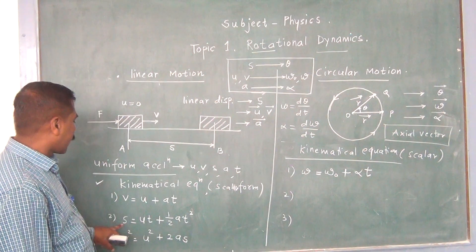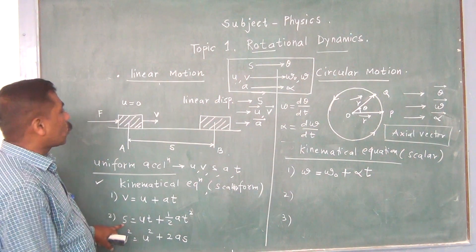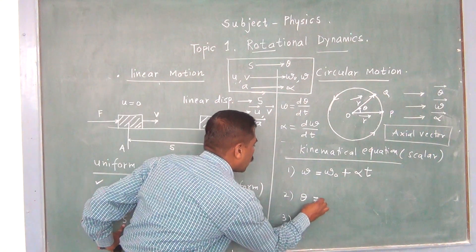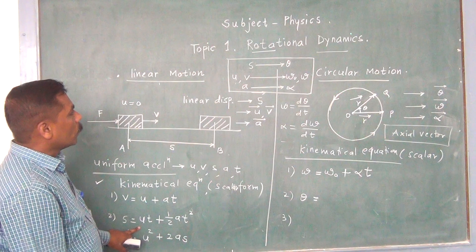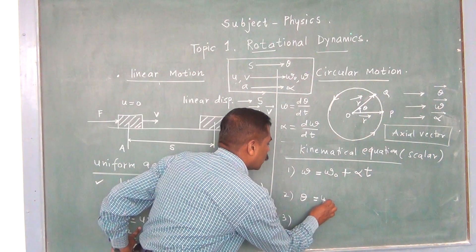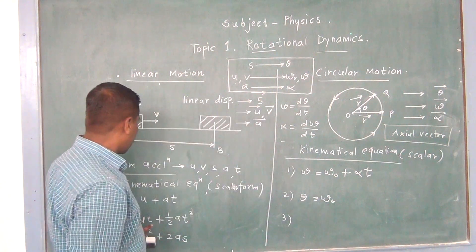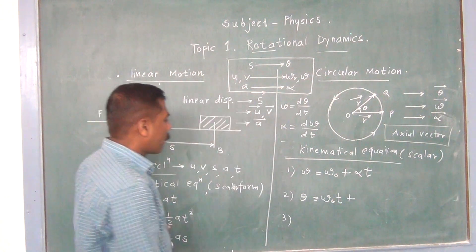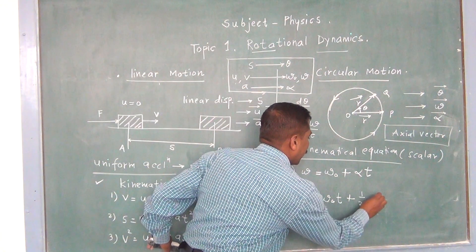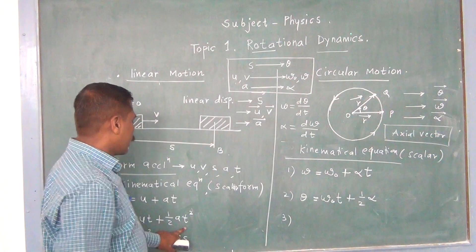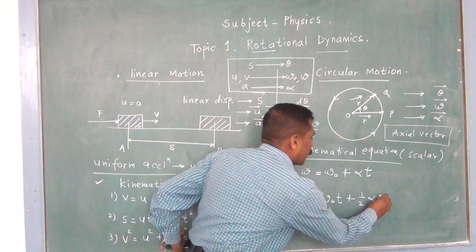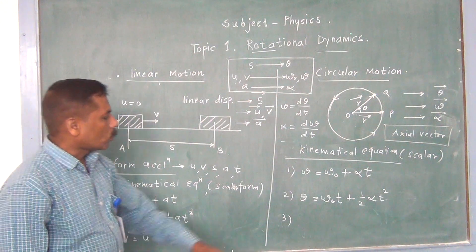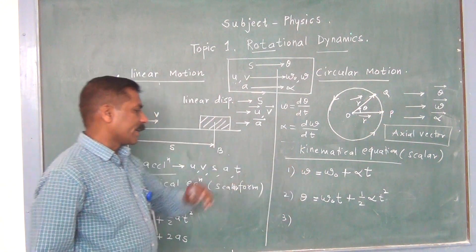How can we find out the second kinematical equation? S, the linear displacement, is replaced with theta. U is replaced with omega 0, then T, plus half — a constant — A is replaced with alpha, and T squared remains the same. This is called the second kinematical equation: theta equals omega 0 T plus half alpha T squared.